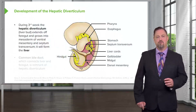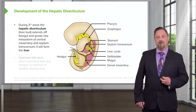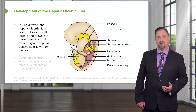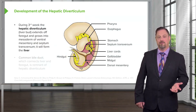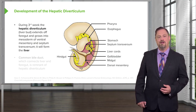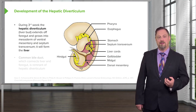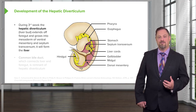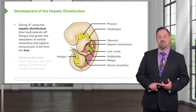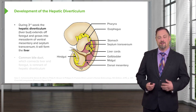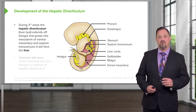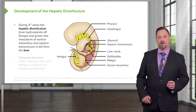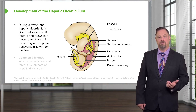During the third week of development, a bud off of the foregut called the hepatic diverticulum develops. This is also sometimes called the liver bud, and it will indeed become the liver. It grows anteriorly into the septum transversum. The septum transversum and the hepatic diverticulum contribute different tissues to the developing liver, so both are necessary.